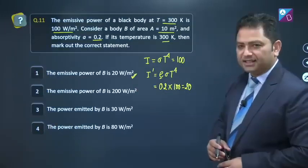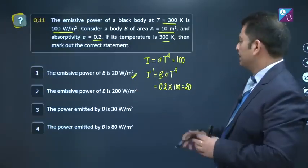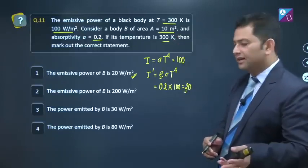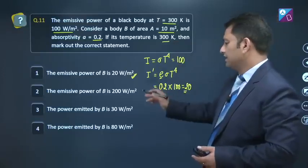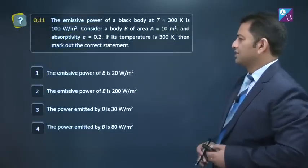Let's discuss power. Intensity is Watt per meter square, so if you multiply intensity by area, you get power emitted. 20 into 10, that is 200, no option is present. So clearly, option number 1.